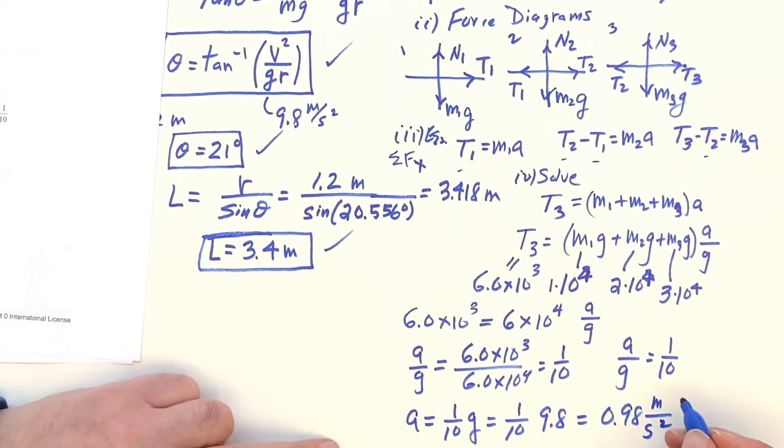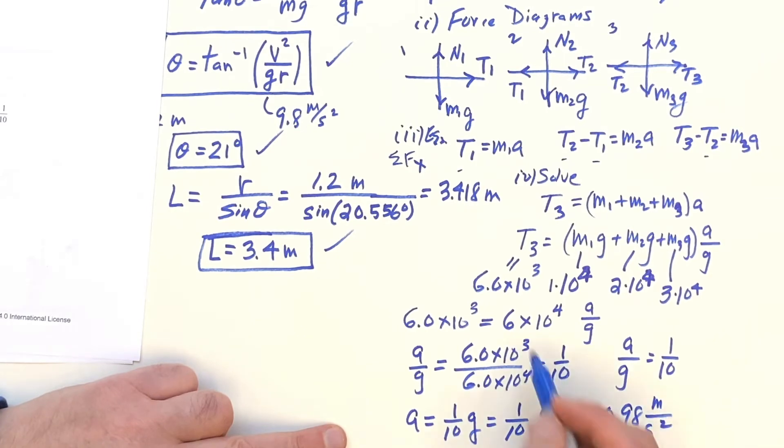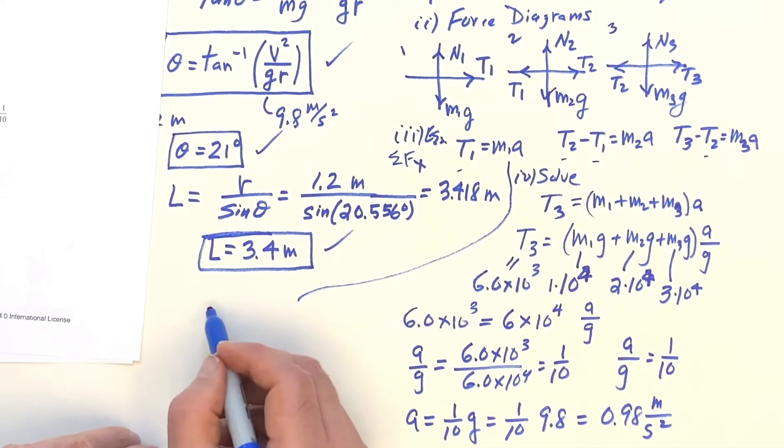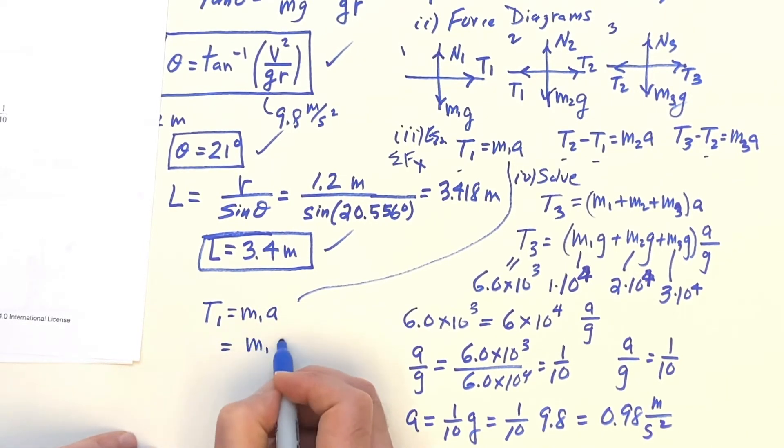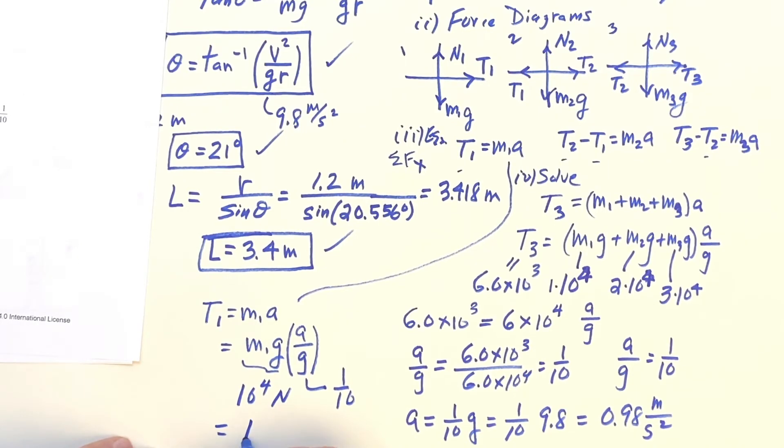And then, if you want to get the tensions now, that's very easy. Here is tension 1, this M1A. But I'd rather do this trick. This is M1G times A over G. Since A over G is 1 tenth, and since this is 10 to the fourth Newtons, I readily get 1 times 10 to the third Newtons.